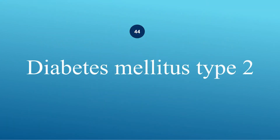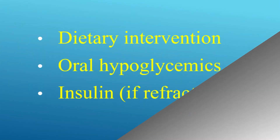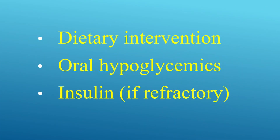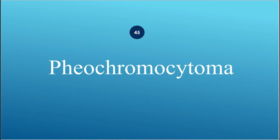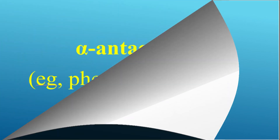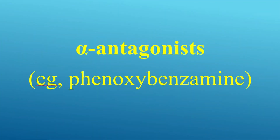How to treat diabetes mellitus type 2? Use dietary intervention, oral hypoglycemics, and insulin if refractory. How is pheochromocytoma treated? Use alpha antagonists such as phenoxybenzamine.